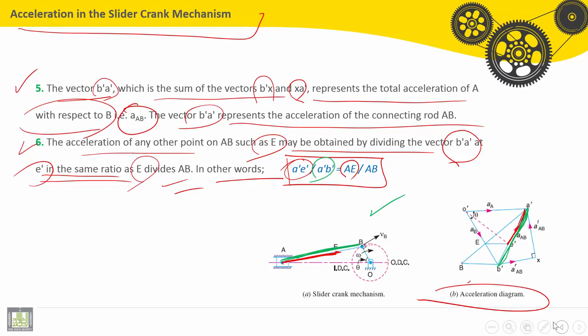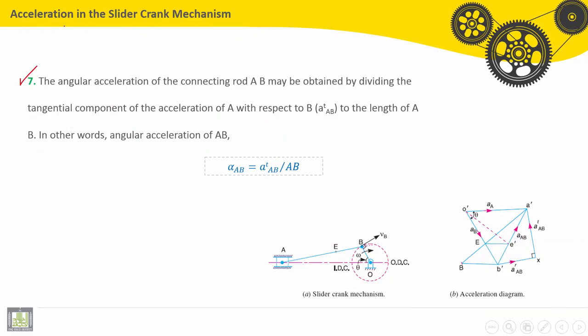That means A-E-dash divided by A-B-dash should equal A-E divided by A-B. Now we can find on the acceleration diagram the acceleration A-E, which is the vector O-dash E-dash. This is the acceleration of point E measured to scale.